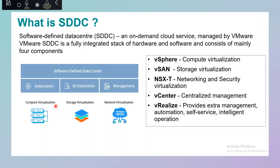In VMware, there are many products. Initially we have ESX, ESXi, and vSphere branding. Then we have Virtual SAN, and for network virtualization we have NSX and NSX-T. To manage all servers and virtual machines, we have vCenter Server — the virtual center. Then we have the vRealize suite of products covering operations management, automation, orchestration, self-service management, and intelligent operations.